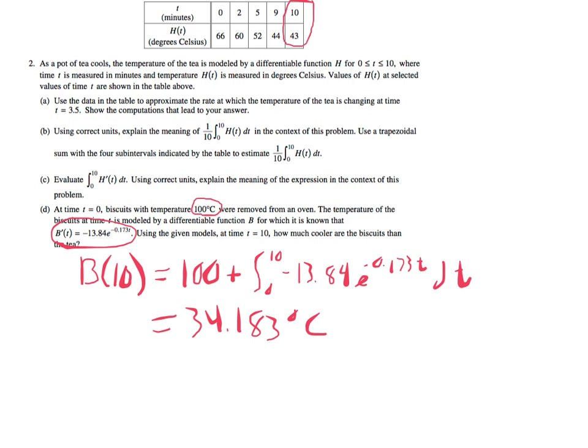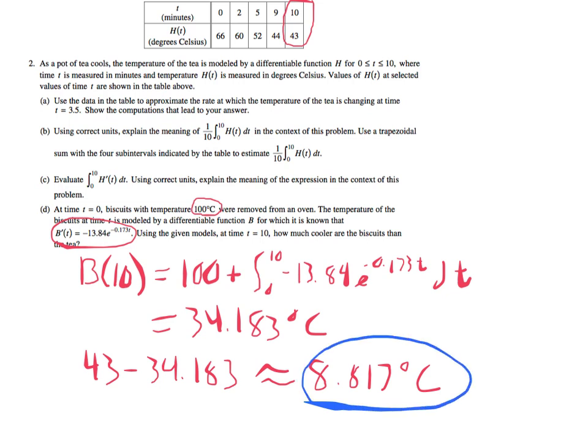So the difference between the two, the tea is still at 43 degrees, which we talked about up here. The biscuits are at 34, so we just need to look at how much cooler are the biscuits than the tea, so just subtract. We knew that the biscuits were going to be cooler, but how much cooler? Let's subtract. So tea minus biscuits, so that's going to be 43 minus 34.183, and that gives us an approximate answer of 8.817 degrees Celsius when we subtract. And that's our final answer. That's how much cooler the biscuits are than the tea.